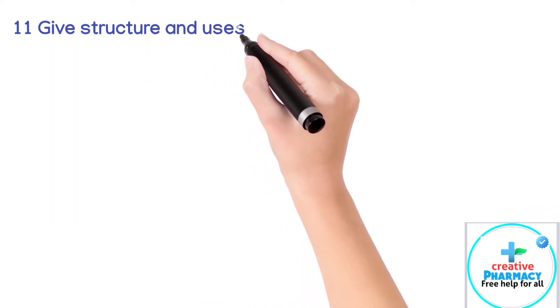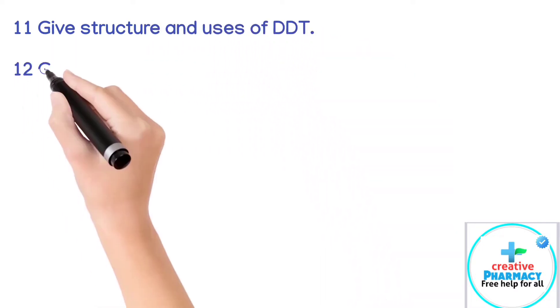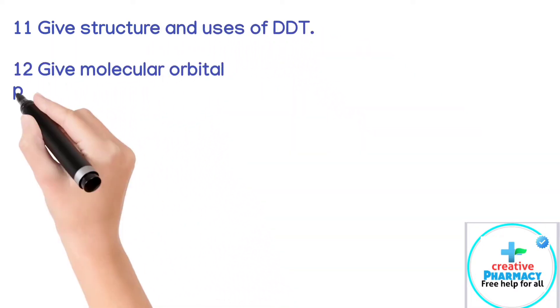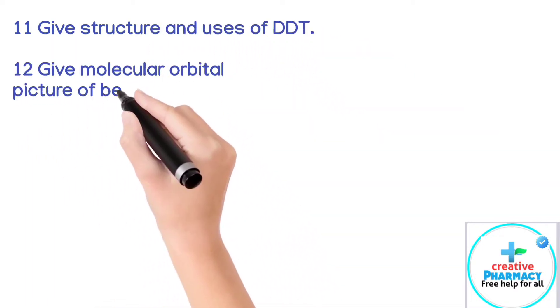Question 11: Give the structure and uses of DDT. Question 12: Give the molecular orbital picture of benzene.